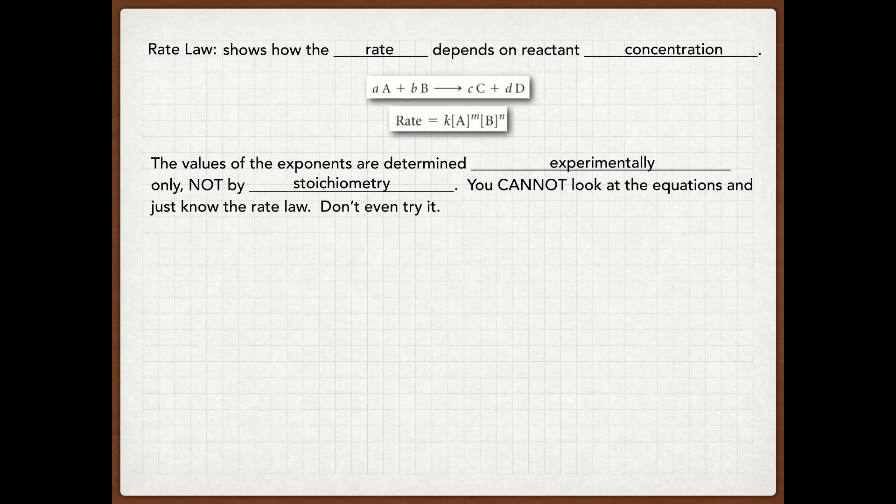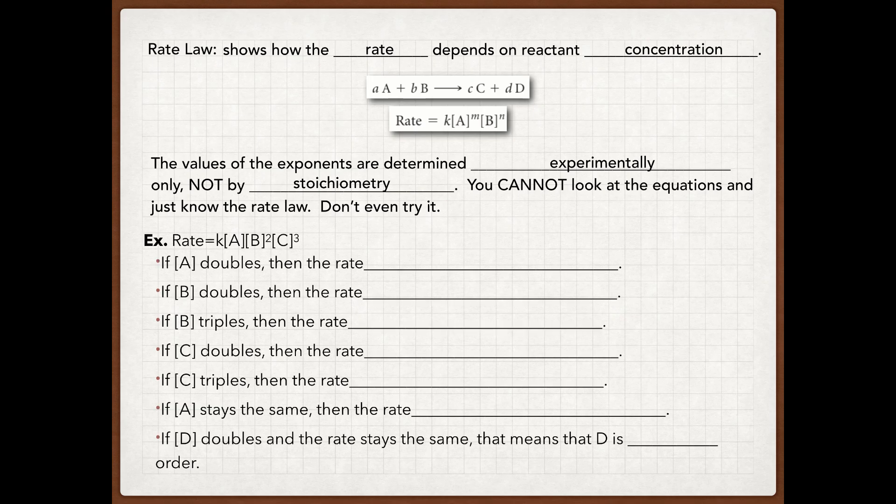Don't ever use the reaction itself in order to determine the order. Instead, we have to do it experimentally, which I'll show you how to do in a little bit. So let's actually look at an example of a rate law and see how we can use it in order to determine how concentration affects rate.